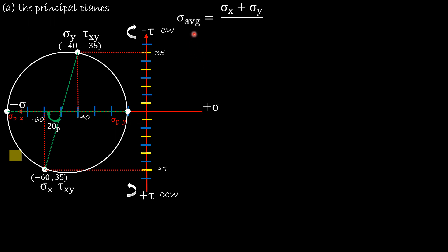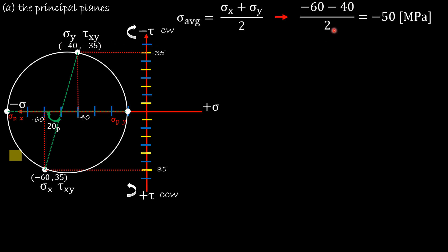To find the average stress: σ_avg = (σ_x + σ_y) / 2 = (−60 + −40) / 2 = −50 MPa. This is the center of the circle. We use this to set up a right triangle where the horizontal leg from the center to the x-face point is 10 (from −60 to −50), and the vertical leg is 35. The hypotenuse of this triangle is the radius of the circle, which represents τ_max, the maximum shear stress.